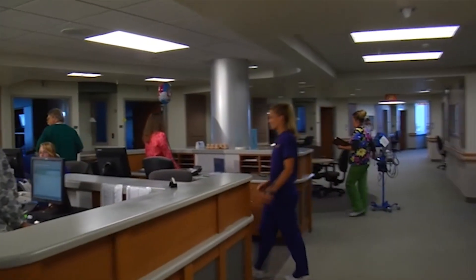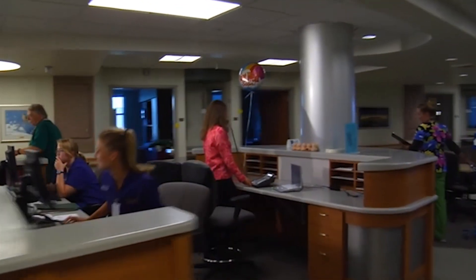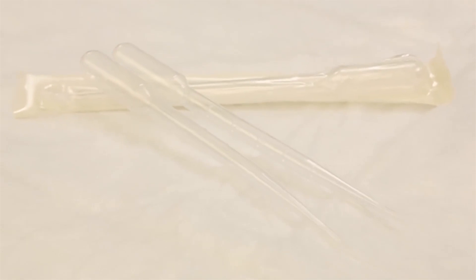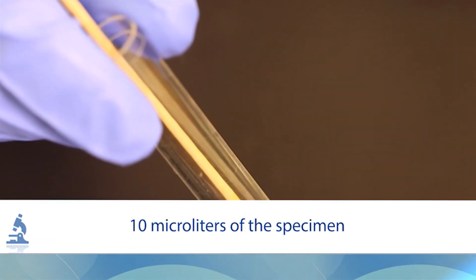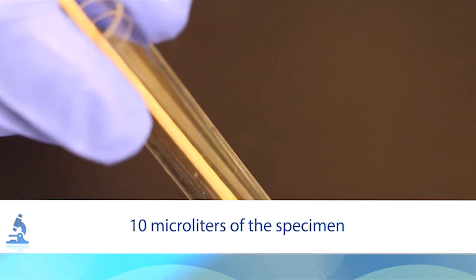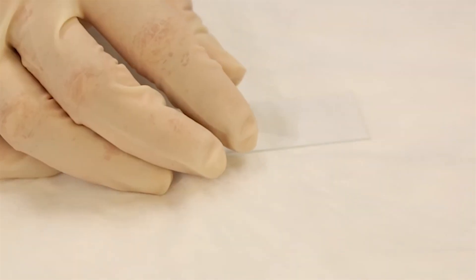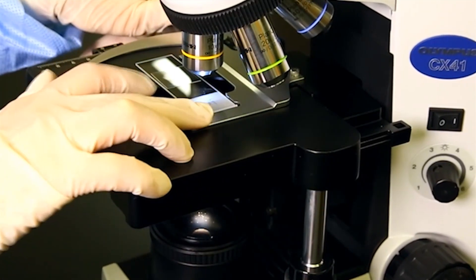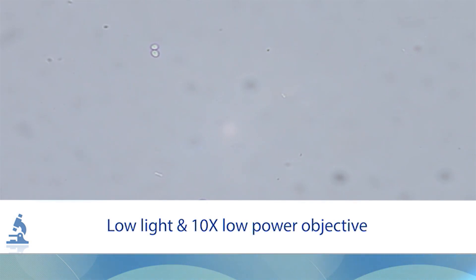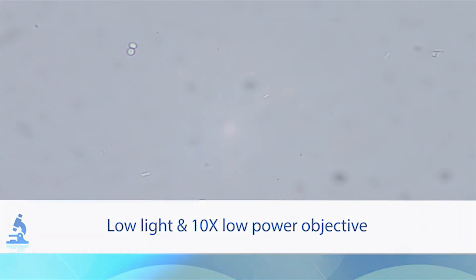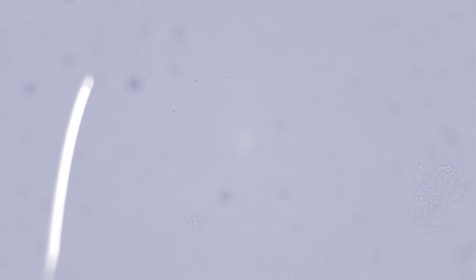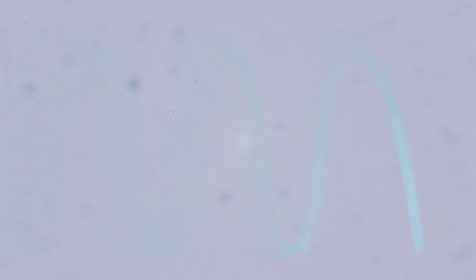A vaginal sample should be taken to the laboratory for examination within 15 minutes. To begin, use a sterile pipette to remove one drop — or 10 microliters — of the specimen from the collection tube. Place the drop on a sterile, labeled microscope slide. Carefully place a cover slip over the drop. Place the slide on the stage of a bright field microscope. Focus using low light and the 10x low power objective, scanning the entire slide using an S-shaped viewing pattern.